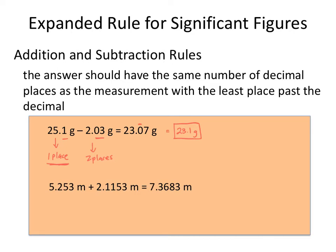We're going to do our rounding, so our 23.07 is going to become 23.1 grams, and our final answer has one place to the right of the decimal. In our second addition example, we have three places to the right of the decimal in one measurement and four places in the other. Our answer has to match the one with the least, so three places is the max. Our final answer is going to be 7.368 because the three doesn't cause the eight to round up. For addition and subtraction, the places to the right of the decimal in your final answer will match the measurement with the least places to the right of the decimal.